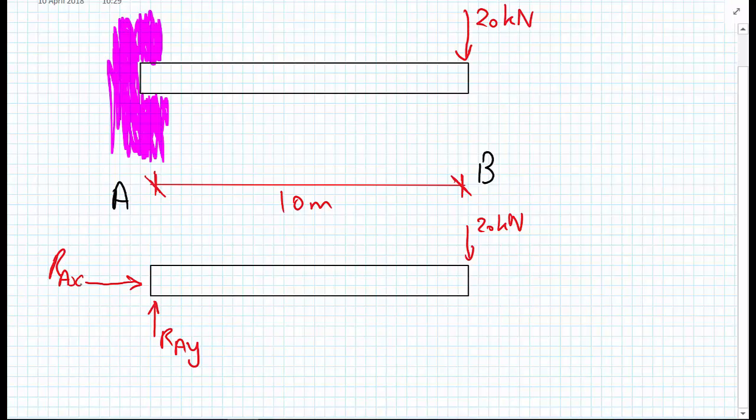And then because this cantilever, this beam, is fully fixed into the wall, we can also expect that this wall can produce a moment right on the end here. And this moment I'm going to call M subscript A.